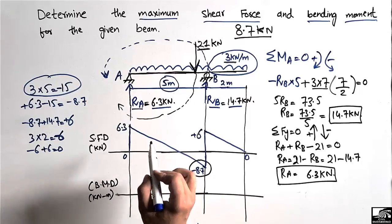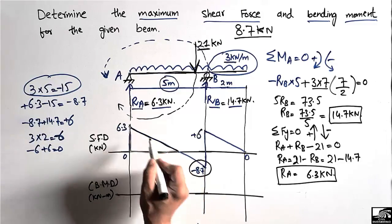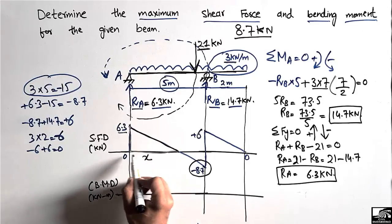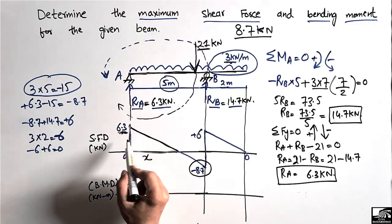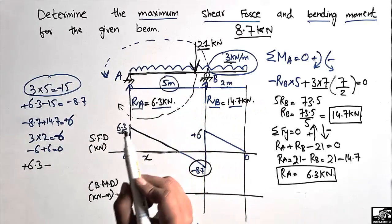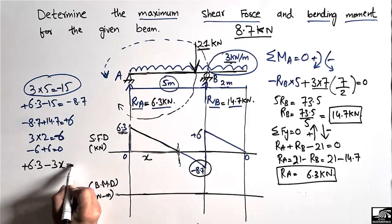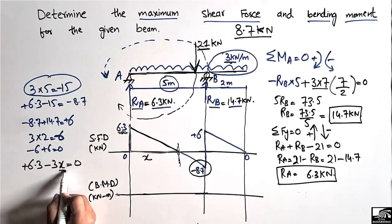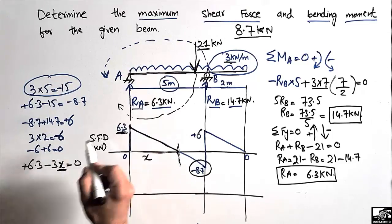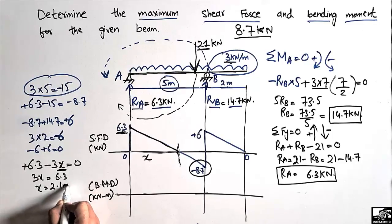To find the bending moment, we calculate the areas of the shear force diagram boxes, which appear as triangles. The height on the left side is 6.3 kN, but we need to find the base length x where the shear force equals zero. Setting 6.3 − 3x = 0 gives x = 6.3 ÷ 3 = 2.1 meters. This means the shear force is zero at 2.1 meters from point A, and the remaining distance to B is 5 − 2.1 = 2.9 meters.